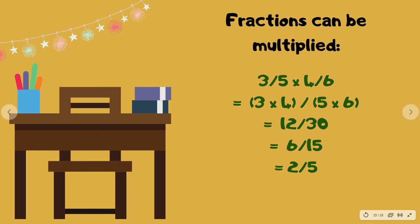Fractions can also be multiplied. If you have 3 over 5 times 4 over 6, you simply multiply the numerators together and multiply the denominators together. So you end up with 3 times 4 over 5 times 6, giving you 12 over 30. Both numbers are even, so divide by 2: 6 over 15. Then 3 goes into both — 3 into 6 is 2, and 3 into 15 is 5 — leaving you with 2 over 5. Those two numbers are prime, so we can't go any further.